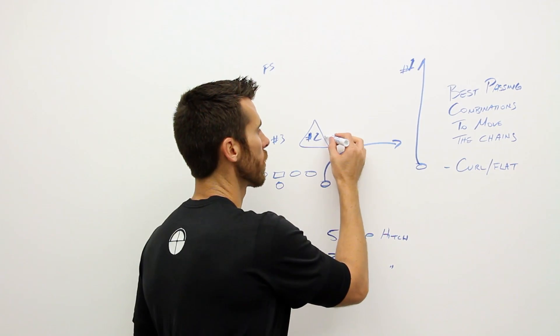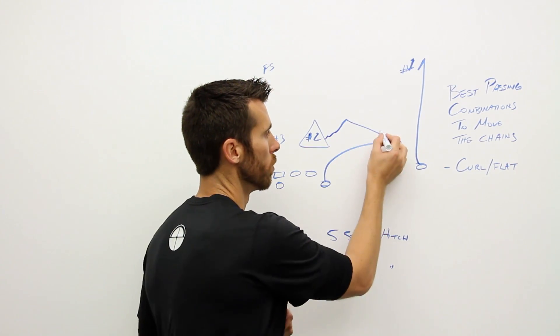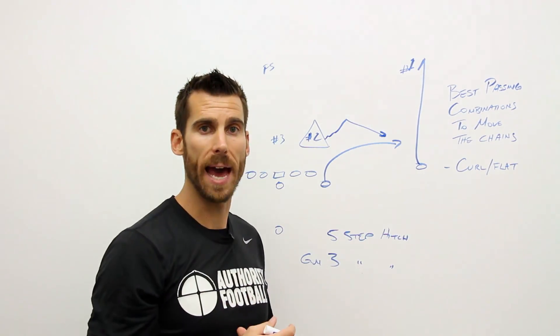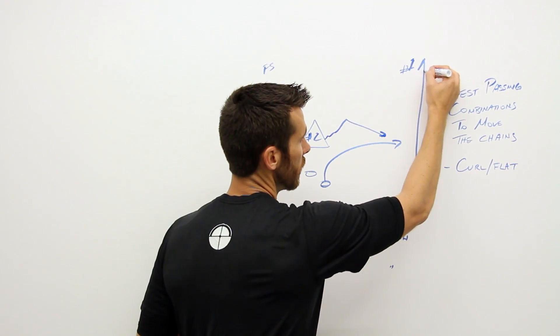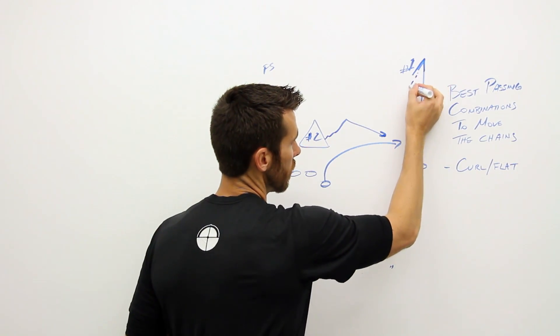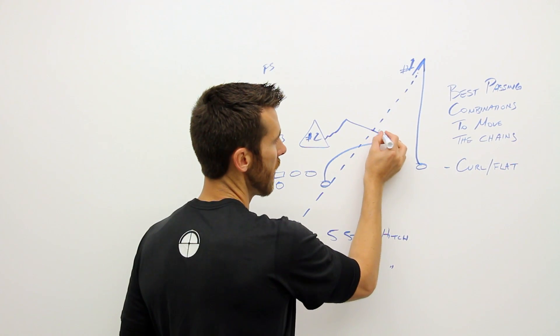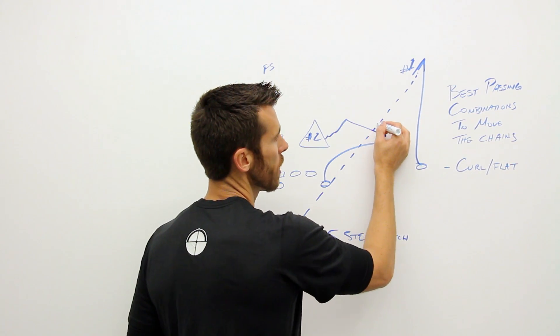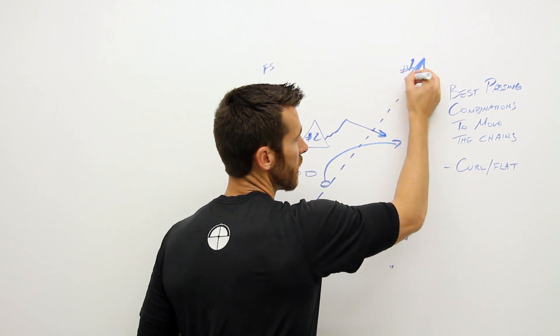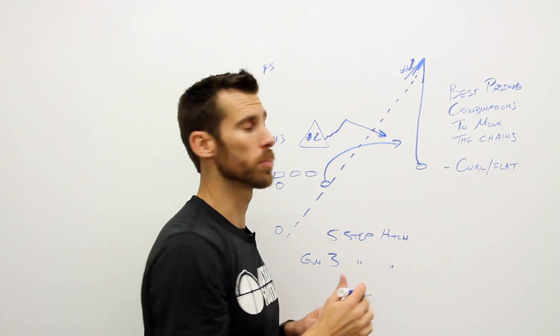Now, in either of those scenarios, the number two defender will most likely take the flat, the shoot route. What that does is, as he commits to that, it creates a throwing lane right behind his ear. So as he passes and commits to that, we have a throwing lane right behind his ear, right about the time that curl route is breaking down.